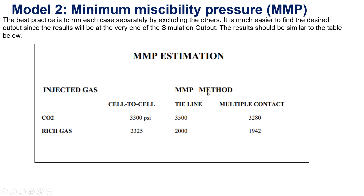So in this table, for injected gas — carbon dioxide and rich gas — for the cell-to-cell and tie-line multiple contact methods, it shows two differences between the two methods. Because the composition of carbon dioxide and rich gas are different, therefore the MMP will be different for the two methods and for rich gas.